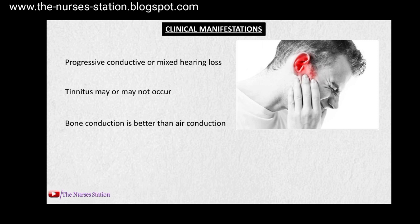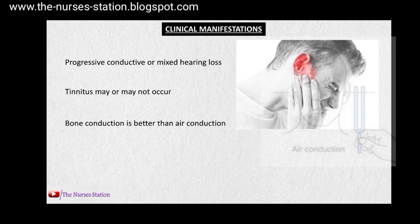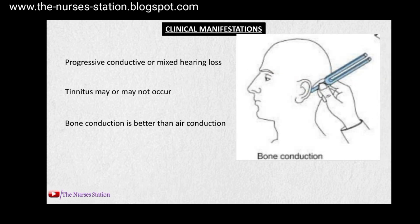Bone conduction is better than air conduction. This is particularly seen in the Rinne test, in which a tuning fork is struck against an object to produce vibrations and then placed near the ear of the patient so that the patient hears the sounds — this is called air conduction because the sound is traveling through the air and reaching the eardrum, middle ear, and inner ear. When the patient stops hearing the sounds, the tuning fork is placed on the mastoid process behind the ear, where the sound waves travel through the bone and reach the inner ear. In otosclerosis, bone conduction is better than air conduction because the stapes cannot vibrate normally, and in bone conduction this mechanism is bypassed as the sound waves travel directly through the bones to reach the inner ear.